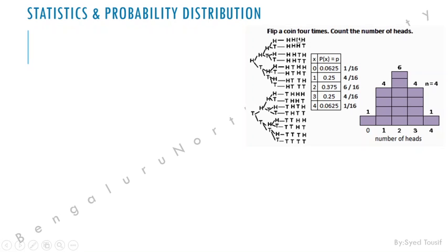Here on the left we have listed all the possible outcomes when tossing a coin four times. Possibilities include four continuous heads, three heads and one tail, two heads and two tails in various arrangements, and four tails. We need to check how many times two heads or three heads will appear.